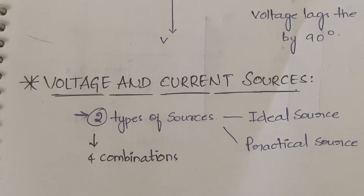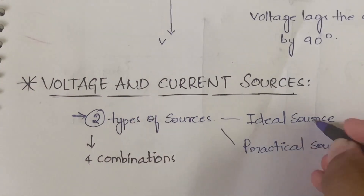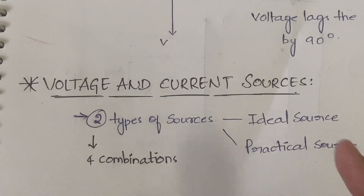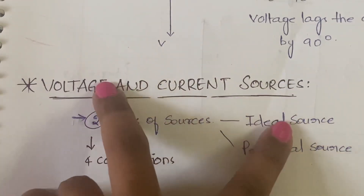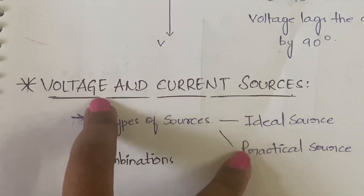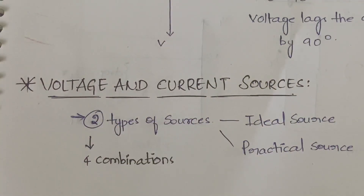Hello everyone, welcome back to my YouTube channel Trouble Free. In this video I am going to explain voltage and current sources in basic electrical engineering. We have two types of sources: ideal source and practical source. We are going to get four combinations — ideal voltage source, practical voltage source, ideal current source, and practical current source.